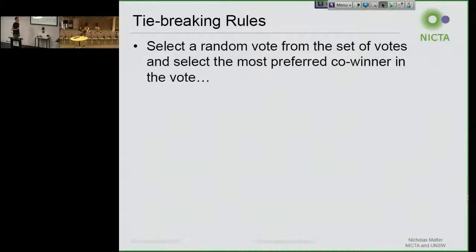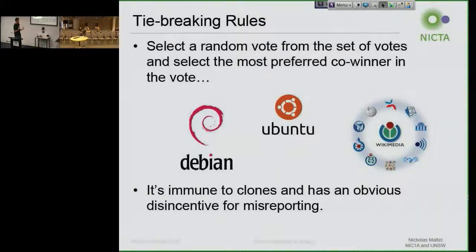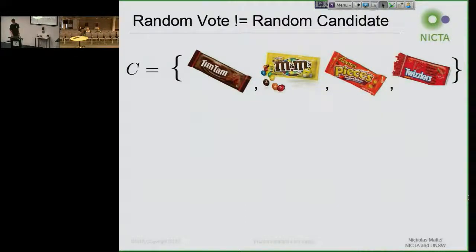Another tie-breaking procedure is to pick a vote at random — this is the idea of random dictator, where we randomly pick someone and break ties based on the order they put down. This is actually a fairly unstudied tie-breaking procedure, but it's used a lot in practice, particularly embedded in the Schulze rule as their official tie-breaking procedure. The reason is it's sort of more responsive in general, it's immune to clones, and it has a very obvious disincentive for insincere reporting — if I say 'if there's a tie I might pick your vote as the tie-breaking procedure,' you start to think maybe you should just put down your honest vote.